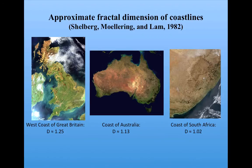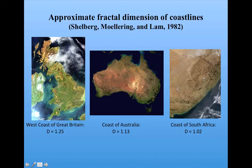The fractal dimension of coastlines has been calculated. Notice that the west coast of Great Britain has a higher dimension than the smoother coast of Australia, or the even smoother coast of South Africa. All of these are a little bit more than one-dimensional, if you look at them as going along a curve, sort of like the Koch curve.